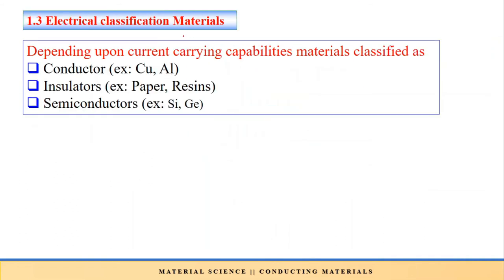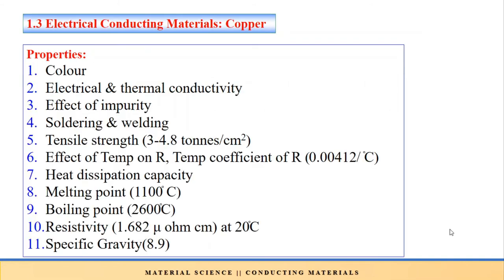The next point is the electrical classification of materials. Depending on the current-carrying capacity, materials are classified as conductors, insulators, and semiconductors. We have seen the insulator part in a previous unit. In this unit we will discuss conducting materials such as copper, aluminum, or any other materials.